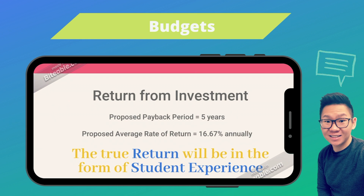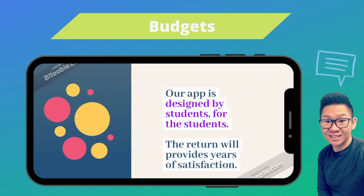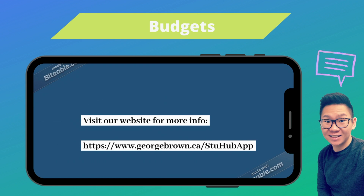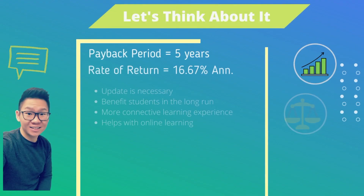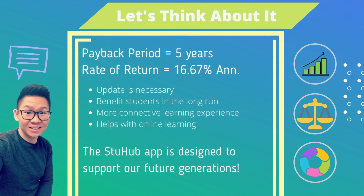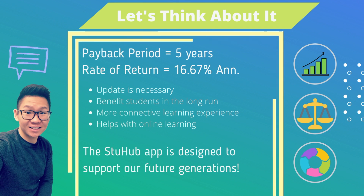Rate of return: our proposed payback period is five years with an average rate of return of $16.67 annually. The true return will be in the form of student experience. Our app is designed by students for the students. Although our proposed payback period is five years, our team believes that StuHub is a necessary investment for George Brown College. Not only will this app benefit students in the long run, but it will also create a more connective learning experience more in line with the current remote learning platform. Most importantly, this app is not a cash grab — it was created with the idea in mind to help support our future generations to come. Now to Monique with more information about the potential risks.